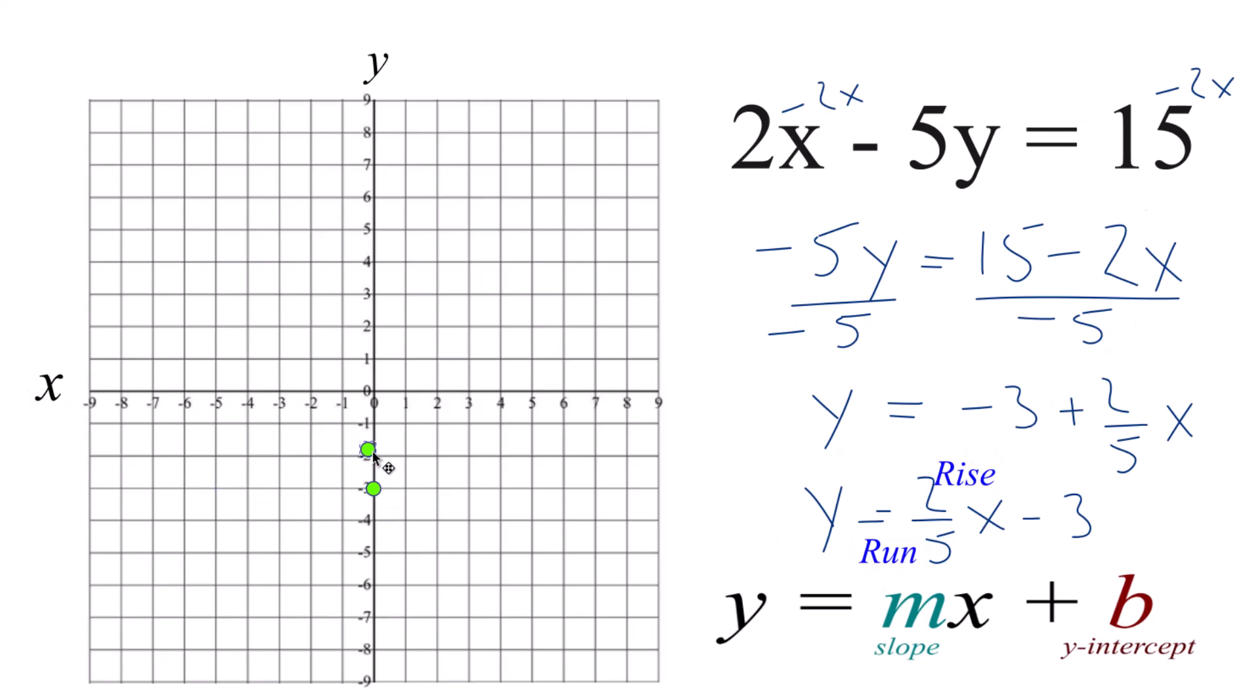We go to our y-intercept, we rise 1, 2. We run 1, 2, 3, 4, 5. That's our second point. From there, we could rise 1, 2, and go over 1, 2, 3, 4, 5. But we're off the graph.